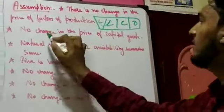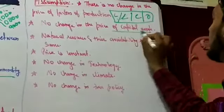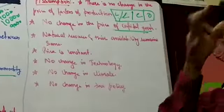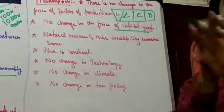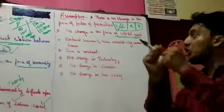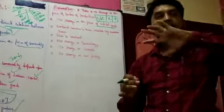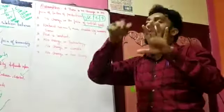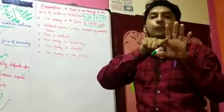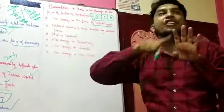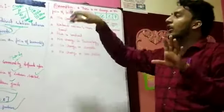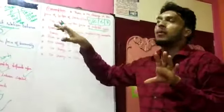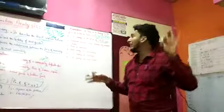Next assumption: no change in the price of capital goods. Whatever capital goods you have in the organization, there will be no change — it is totally fixed. Because if you bring a change in the capital goods, the supply curve will not have the expected impact; it will go in an inappropriate way and the supply will get demolished.